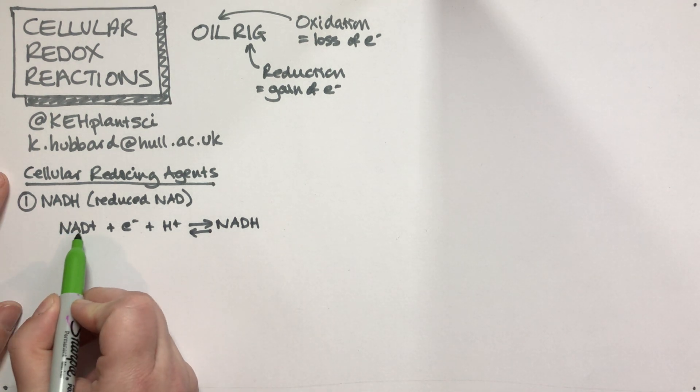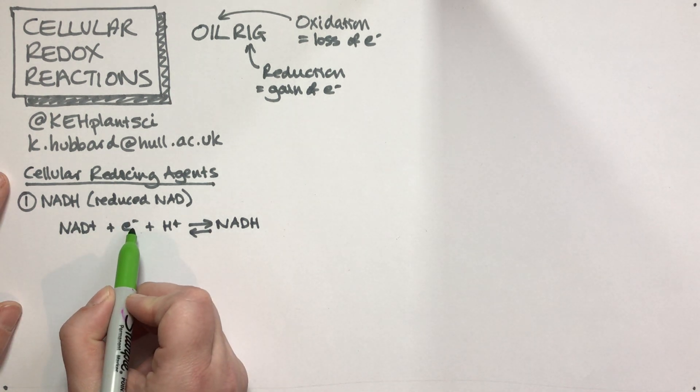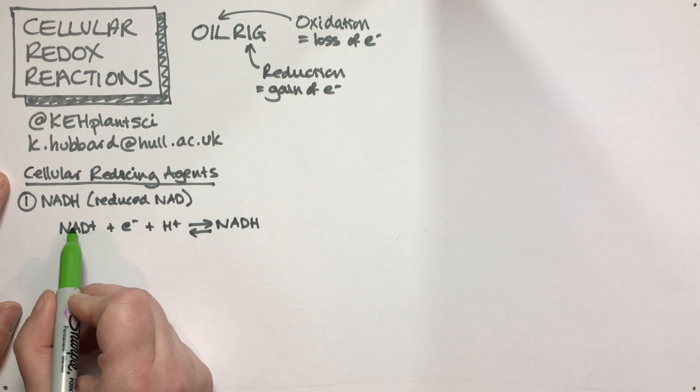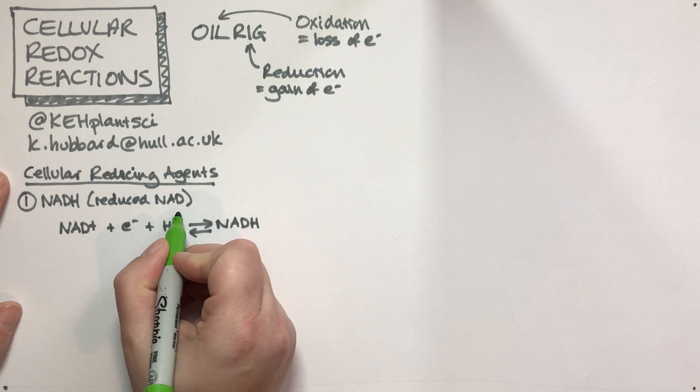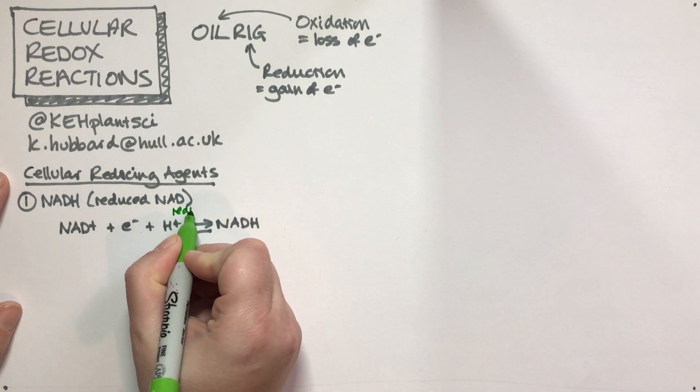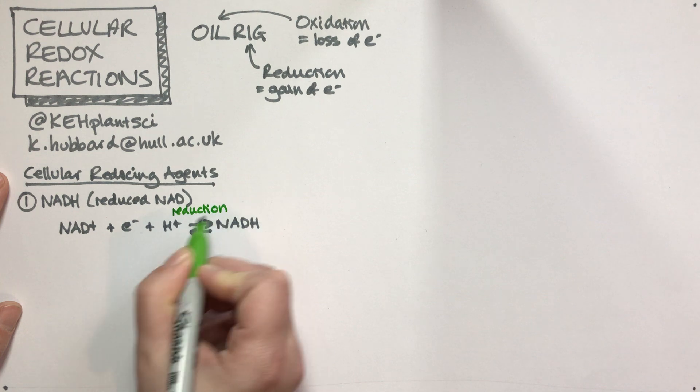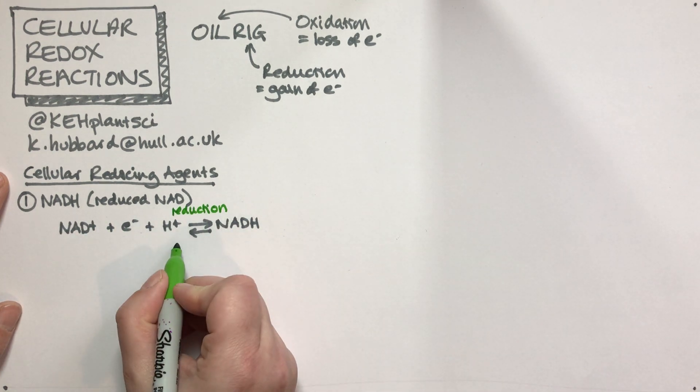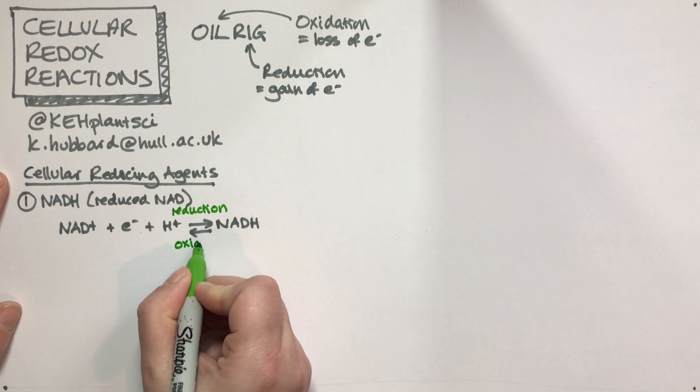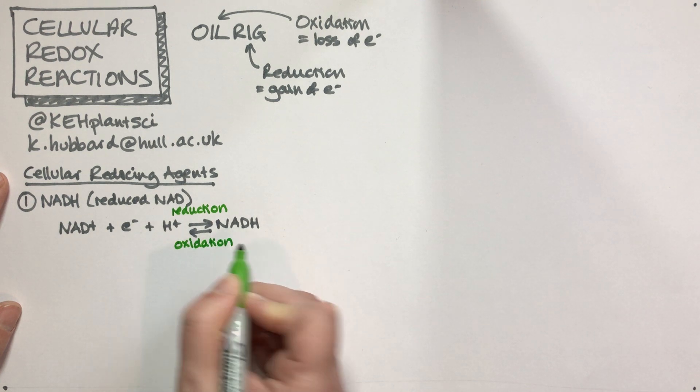Let's think about what's going on here. We start with NAD+ plus an electron. This is going to gain an electron through this reaction, so this must be a reduction reaction. If we go back in the other direction, it must be an oxidation reaction.